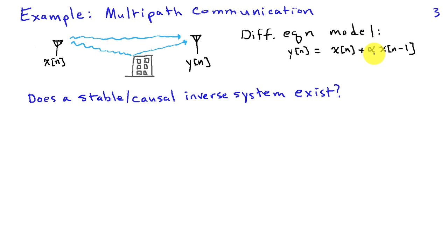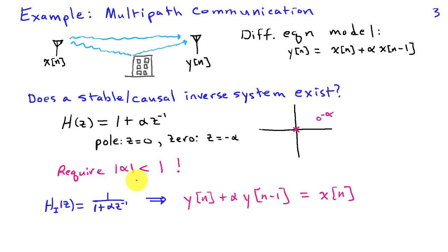If I have this kind of distortion of a transmitted signal, the question is, can I find a stable and causal inverse system to reverse the distortion? Let's define the system function H of z from the difference equation. We see that it's just 1 plus alpha z inverse. Here we have a pole at 0 and a zero at z equals negative alpha. The existence of a stable and causal inverse system requires that all the zeros of H of z be inside the unit circle. Therefore, to have a stable and causal inverse system, we must have the magnitude of alpha to be less than 1.